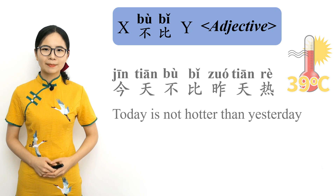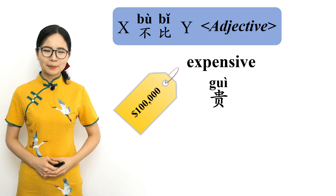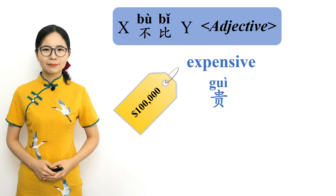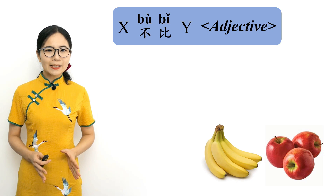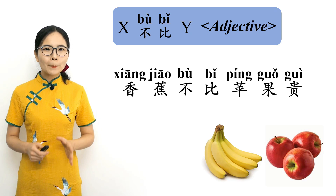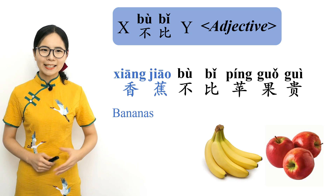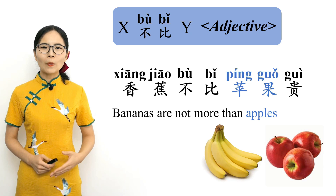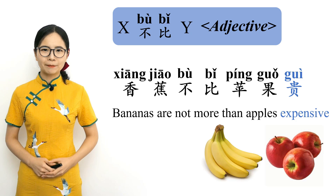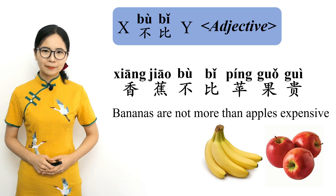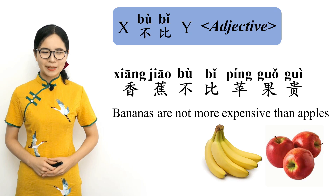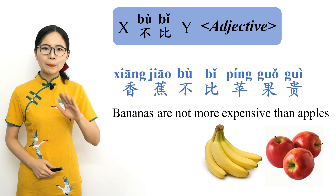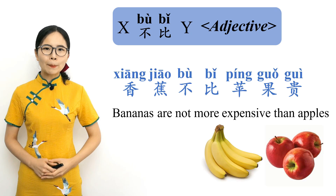The Chinese word for expensive is 贵. Please repeat after me. 贵 — expensive. Bananas are not more expensive than apples: 香蕉不比苹果贵. 香蕉 means 'bananas,' 不比 means 'are not more than,' 苹果 means 'apples,' and 贵 is an adjective meaning 'expensive.' Literally, 'bananas are not more than apples expensive' — bananas are not more expensive than apples. Please repeat after me. 香蕉不比苹果贵. Bananas are not more expensive than apples.